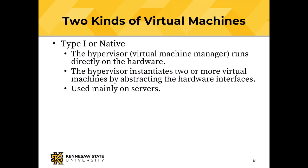Two kinds of virtual machines: type one or native. I'm going to talk about this thing called a hypervisor — a very strange word. It came about because early operating systems were called supervisors. What is better than a supervisor has to be a hypervisor, and that's where the name came from. The hypervisor, that is the virtual machine manager, runs on the bare metal hardware and instantiates two or more virtual machines by abstracting the hardware interfaces. We use type one virtualization on servers. The thing behind me is type two, which we'll talk about in a minute.